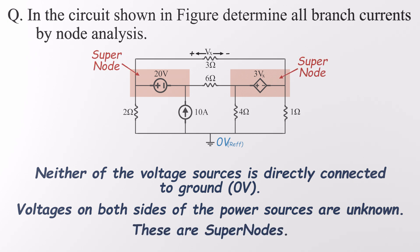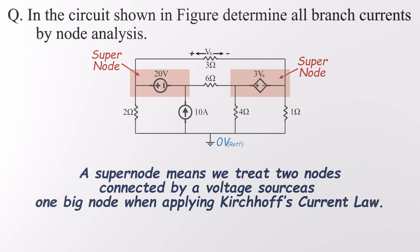This kind of setup creates what's known as a supernode. Sounds intimidating? Don't worry, it's not as scary as it sounds. A supernode simply means that when a voltage source sits between two non-ground nodes, we treat those two nodes as one big node when applying Kirchhoff's Current Law or KCL. It's a clever trick that lets us skip the headache of trying to find the current through the voltage source directly.